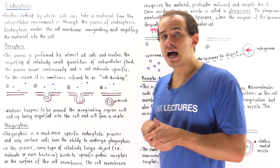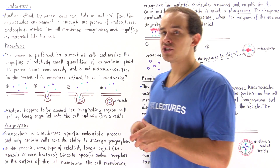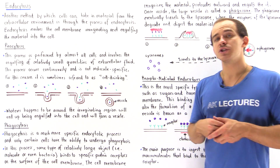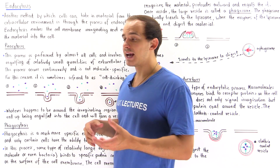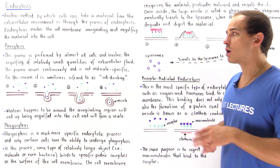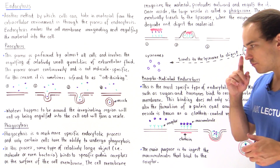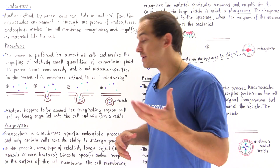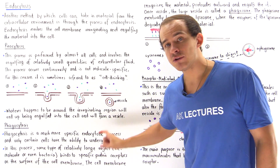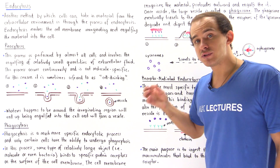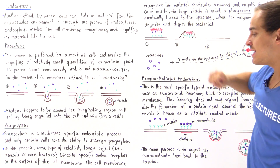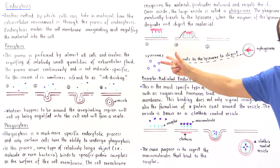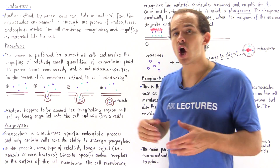A more specific type of endocytotic process is phagocytosis. Phagocytosis is a much more specific process and only certain types of cells — such as phagocytes found in the immune system — can undergo it. In phagocytosis, a relatively large molecule such as a macromolecule or even a bacterium binds to specific protein receptors found on the cell membrane. Once the receptor on the cell membrane binds to the molecule, the cell recognizes the material and protrudes outward to engulf it.